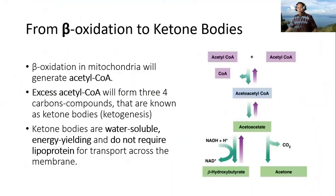Let's start from beta oxidation to ketone bodies. Beta oxidation in mitochondria will generate acetyl-CoA. Excess acetyl-CoA will form three or four carbon compounds. They are known as ketone bodies, or ketogenesis. Ketone bodies are water-soluble, energy-yielding, and do not require lipoprotein for transfer across the membrane.